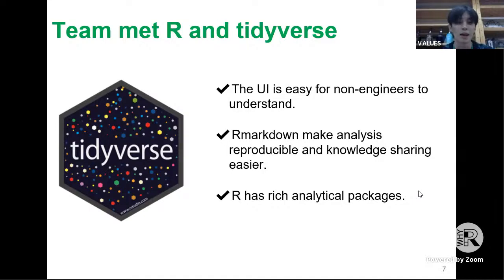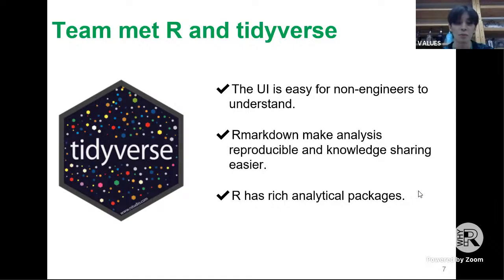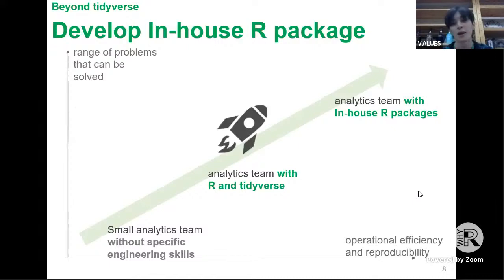Because R has become the team's core tool, analysis processes can be saved as text, making analysis more reproducible. Code reviews and knowledge sharing within the team have become more popular. The amount of data we can handle has also increased compared to when we used BI tools, and the benefits of interactive programmatic processing have greatly improved work efficiency.